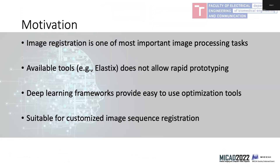Why image registration? Image registration is one of the most important image processing and preprocessing steps, and it is an important part when you have sequential data. It can be important in many research projects. If we have sequential data, we have two possibilities: the first is to use a standard algorithm based on optimization of a cost or objective function, very often using an adaptive stochastic gradient algorithm.